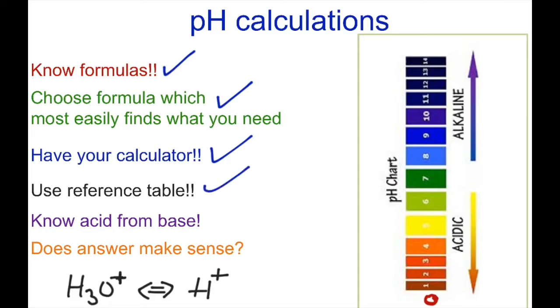Use your reference table. Why? Because it helps you know acid from base. And why do you need to know acid from base? Because bases produce hydroxide. Acids produce H-plus or H3O-plus for us. So that's a very important distinction we need to know.